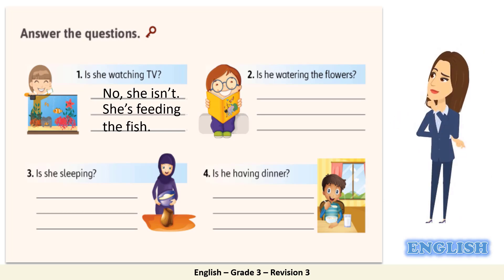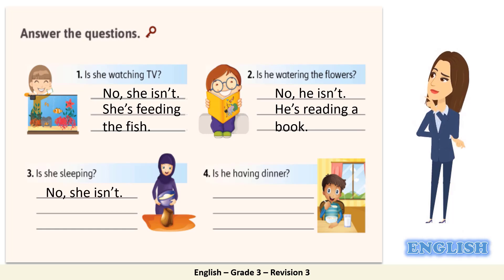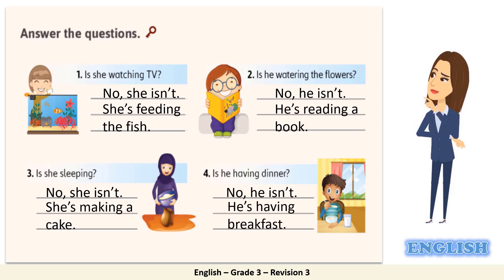Ready to check your answers? Let's do it. Number two: Is he watering the flowers? No, he isn't. He's reading a book. Number three: Is she sleeping? No, she isn't. She's making a cake. Number four: Is he having dinner? No, he isn't. He's having breakfast.